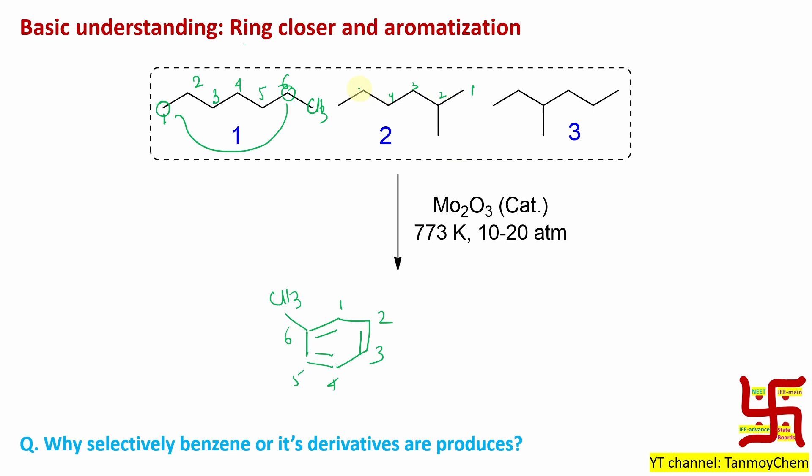Now if you do the same thing for the second isomer, one, two, three, four, five, six. If you do the cyclization, here carbon number two is attached with methyl. For the third case, same thing. This is carbon number three. If you look at this one, this one or this one, all are the same. They are toluene, single substitution.